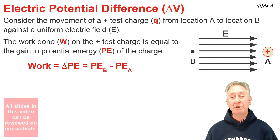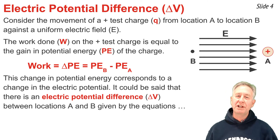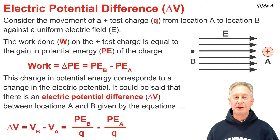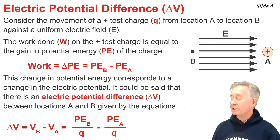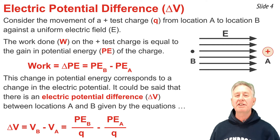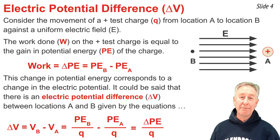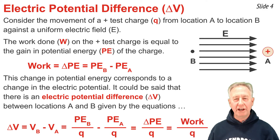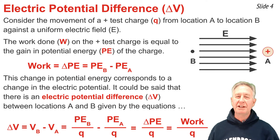Since electric potential equals the amount of potential energy per charge, this change in potential energy also results in a change in electric potential — a difference in electric potential between location B and location A. That difference, or delta V, equals VB minus VA. Since VB equals the potential energy at B per charge, we can substitute that expression into the equation and do the same for location A. So delta V equals the difference in electric potential between A and B all over Q. And since the change in potential energy simply equals the work, delta V equals the work done upon the charge in moving it from A to B per the quantity of charge — that is, delta V equals a unit of energy (delta PE or work) divided by a unit of charge.